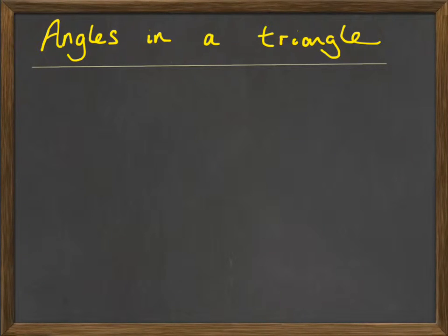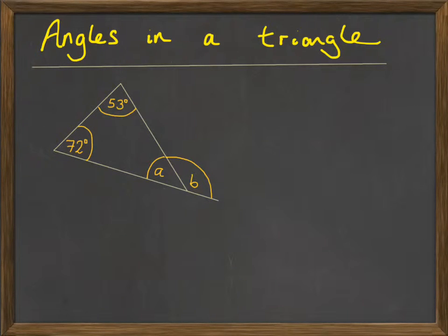Angles in a triangle. Let's consider a problem. We're given a triangle with two known angles, one of 72 degrees and the other 53 degrees, and what we're going to try and do is find the size of angle A. Once we've found that, we're going to find the size of angle B.